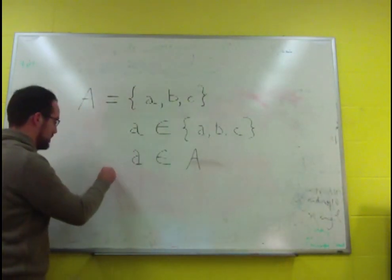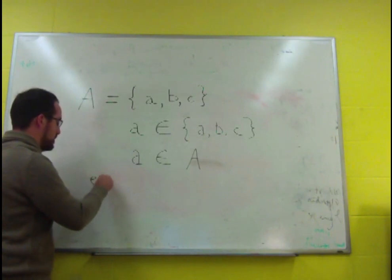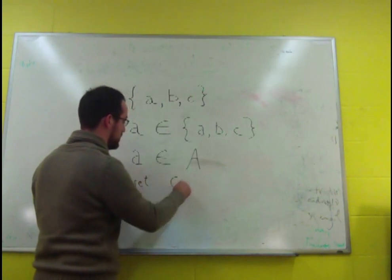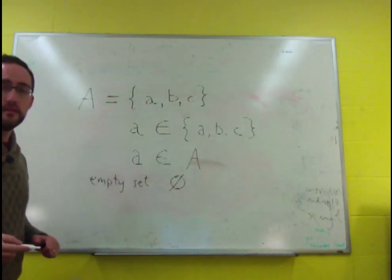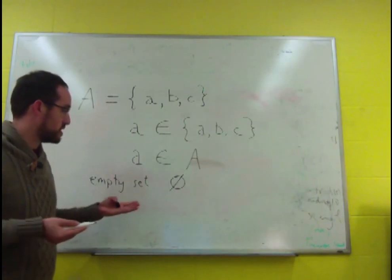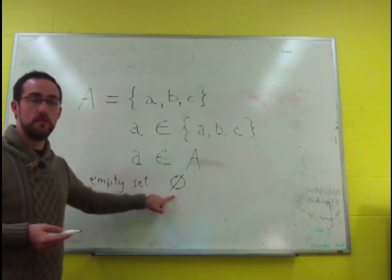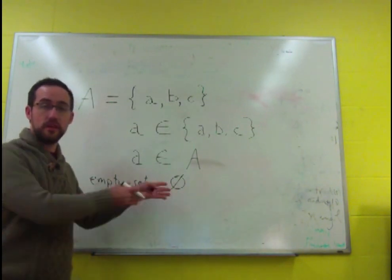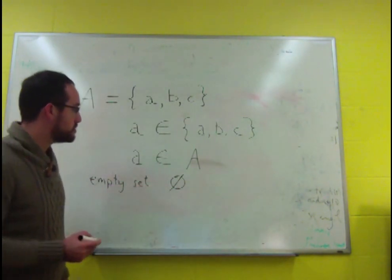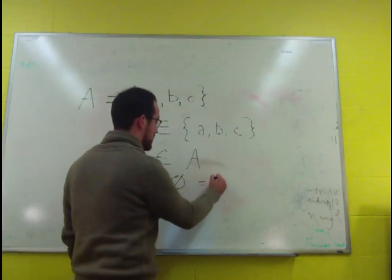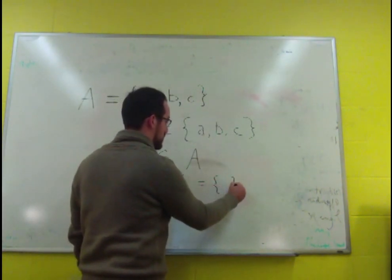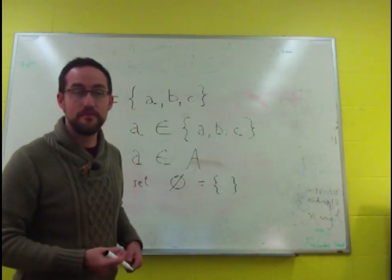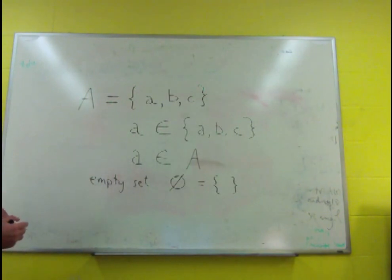The empty set is described or expressed with this symbol, which you recognize as the null symbol in linguistics. And it comes from the use as the empty set symbol. Sometimes, the empty set is written as the set brackets with nothing in them. That is an empty set. So a set with no members is an empty set.